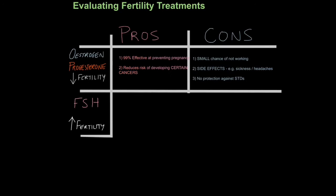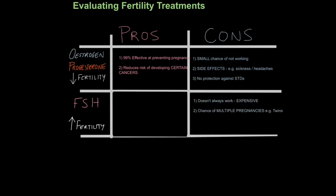Taking FSH can also be used as a fertility treatment to increase fertility. Because it is follicle-stimulating hormone, more eggs start to mature in the ovary, giving a greater chance of becoming pregnant. An obvious advantage is that it helps many people who couldn't previously get pregnant. However, it doesn't always work, can be very expensive to repeat, and there's a chance of multiple pregnancies, such as twins and triplets.